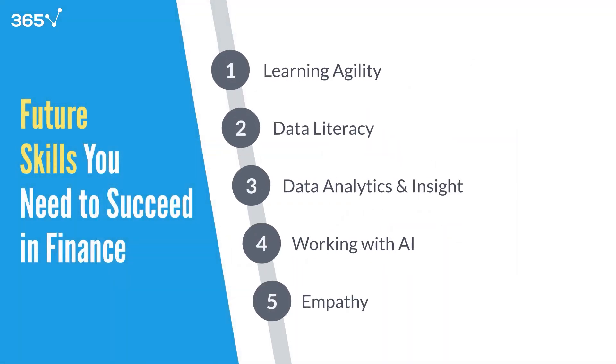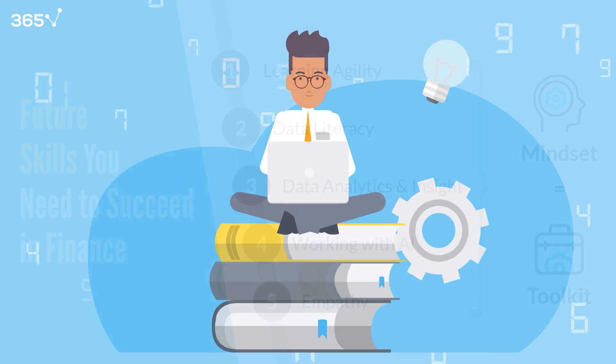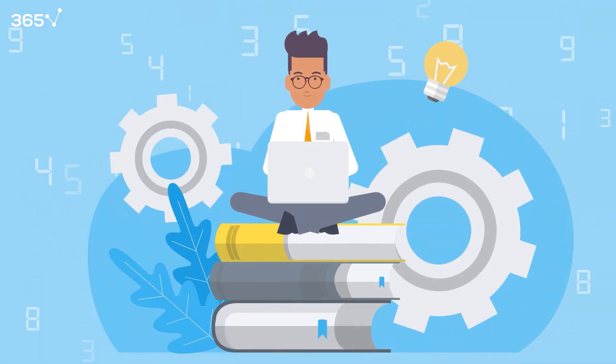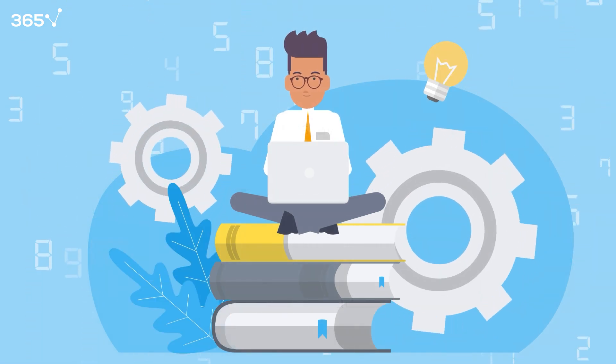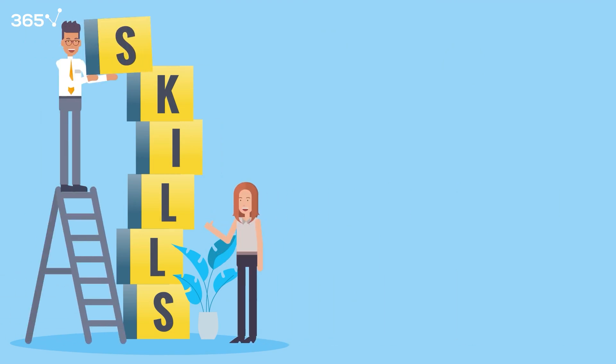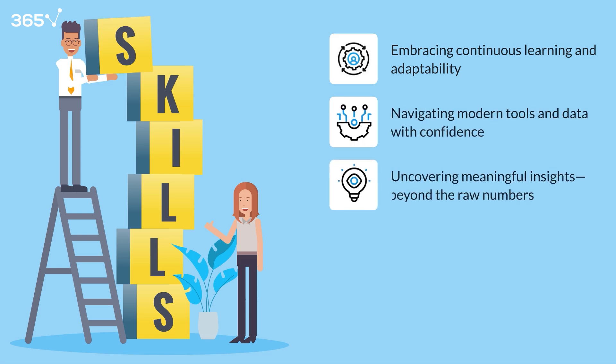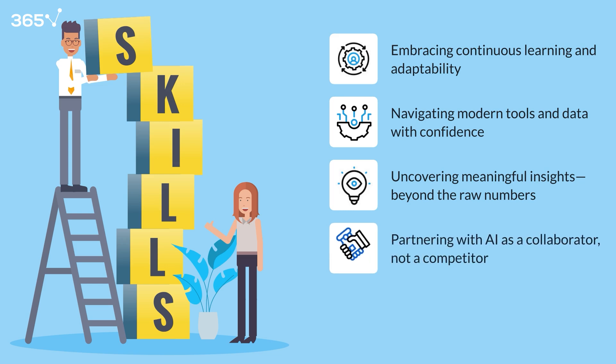So what do all these skills have in common? They're about cultivating a mindset and building a versatile toolkit that grows alongside the industry. In a world where AI can crunch numbers faster than ever and automation can handle routine tasks, the real advantage comes from what humans do best: embracing continuous learning and adaptability, navigating modern tools and data with confidence, uncovering meaningful insights beyond the raw numbers, partnering with AI as a collaborator not a competitor, and building connections grounded in empathy and trust.